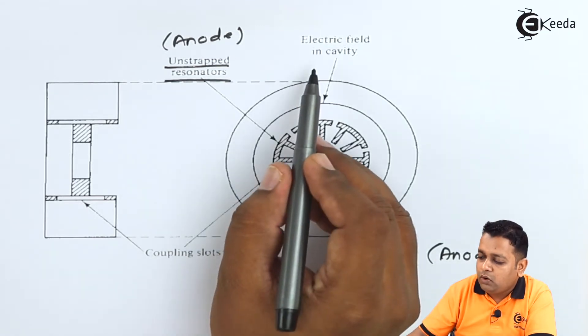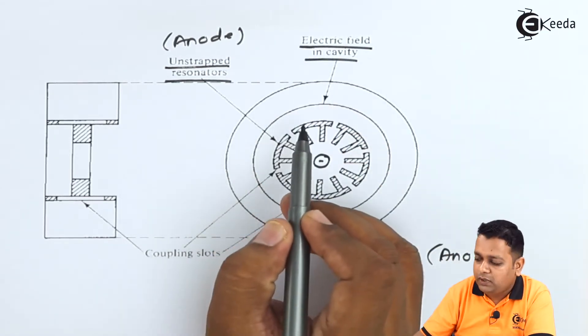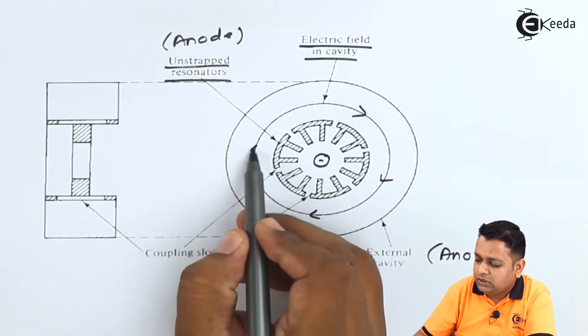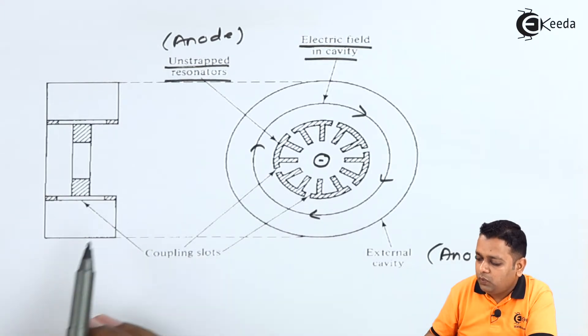And because of this structure of anode having the unstrapped resonators and the cylindrical external cavity, the production of electric field will be there inside the cavity and it is having the circulating orientation.